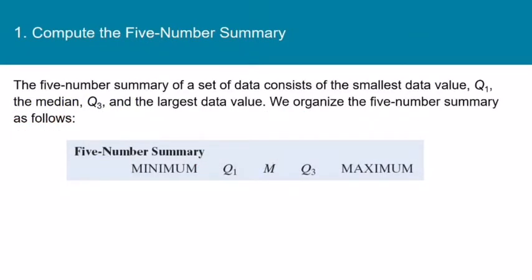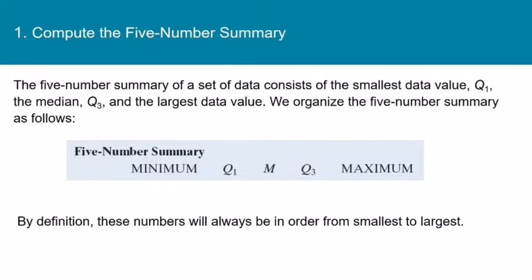Let's start with the five-number summary. The five-number summary of a set of data consists of the smallest value, Q1, the median, Q3, and the largest value, written all in a row. So the five-number summary is just minimum, Q1, Q2, Q3, and the maximum. By definition, these numbers will always be in order from smallest to largest, and we don't put commas between them — just spaces.